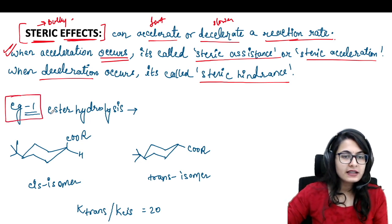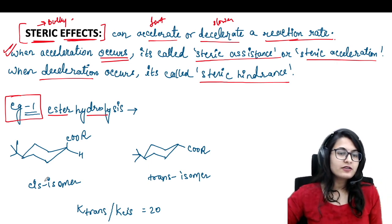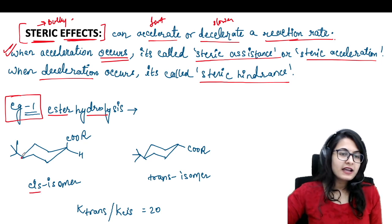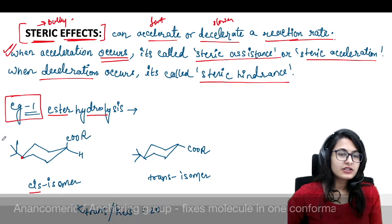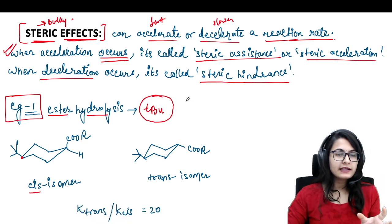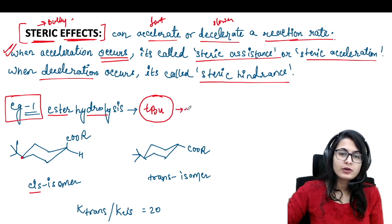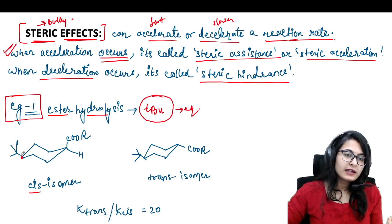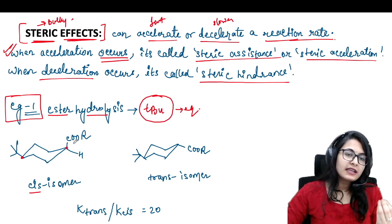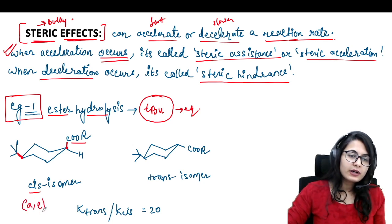Example number one is ester hydrolysis. We are taking two isomers. The first isomer is a cis isomer having the enancomeric group — a tertiary butyl group. As you already must know, the tertiary butyl group is a bulky group and it is going to fix the cyclohexane into just one conformation where the tertiary butyl wants to exist in the equatorial position. So it's going to be only in the equatorial position in both the cis and trans isomers. Accordingly, the ester group could be on the same side — both above the plane in the cis isomer — so one of them is axial and the other one is equatorial.